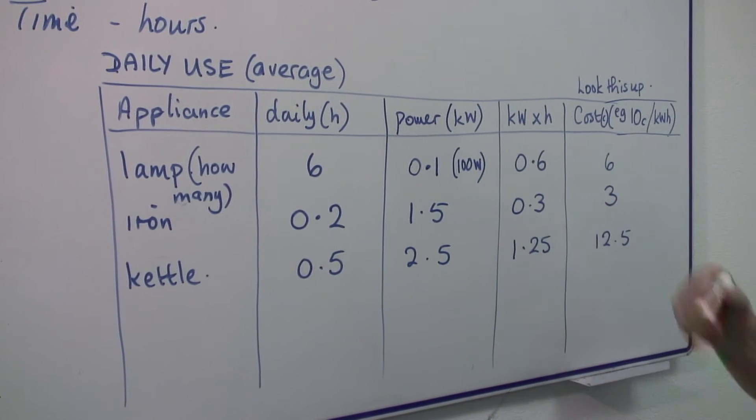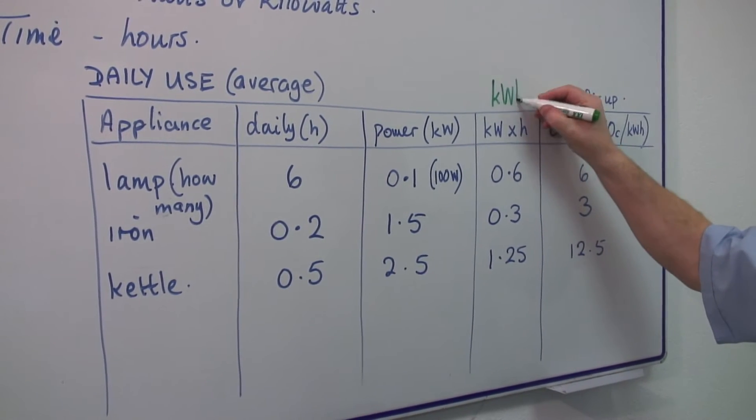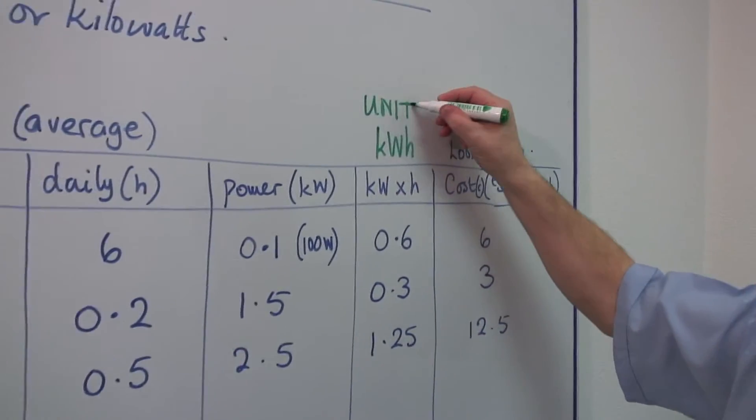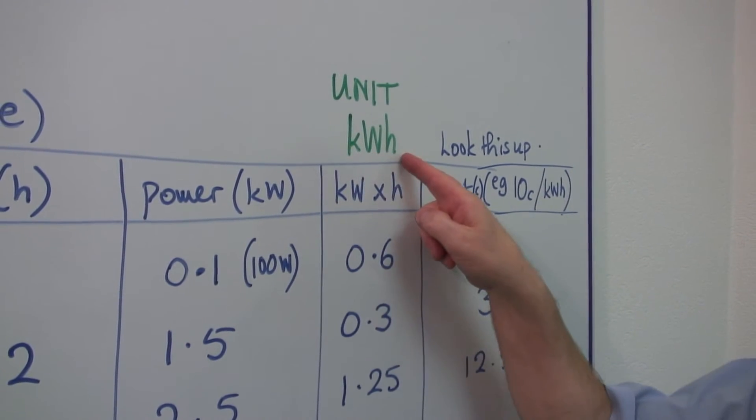This is kilowatts times hours. And this is the basic unit, the kilowatt hour. It's sometimes just called a unit. So if it says so many units, it means kilowatt hours.